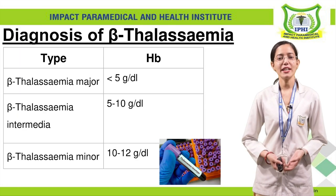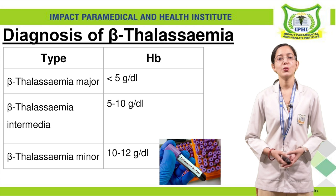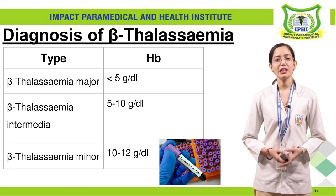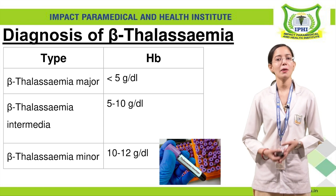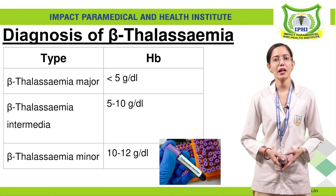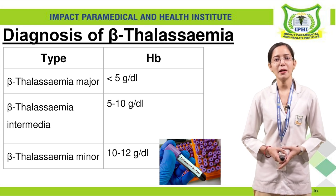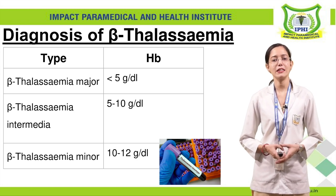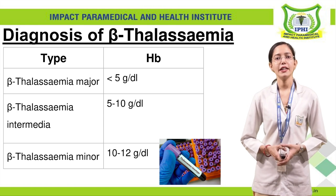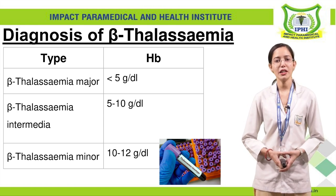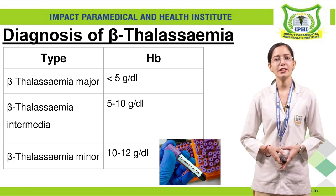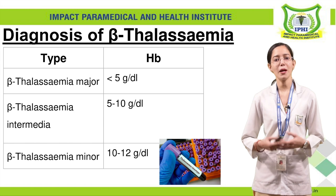How can we diagnose beta-thalassemia? First, we do hemoglobin detection. On the basis of hemoglobin levels, we can determine which type of beta-thalassemia is present. If the hemoglobin result is less than 5, it means beta-thalassemia major. If the reading is 5 to 10, it means beta-thalassemia intermediate. If hemoglobin levels are above 10, it means beta-thalassemia minor.